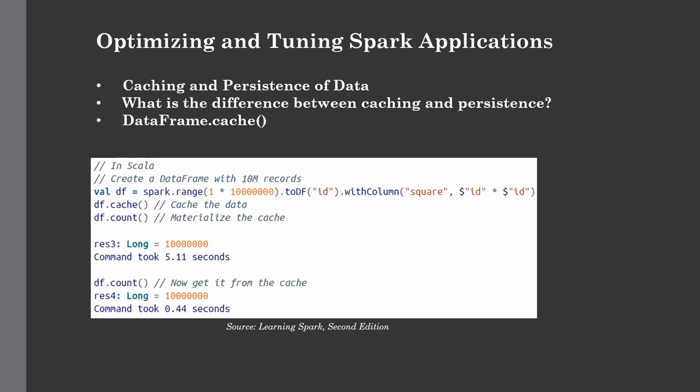You have to remember one important thing: when using cache or persist, the data frame is not fully cached until you invoke an action that goes through every record, like count. If you use an action like take and retrieve only one record, only one partition will be cached, because Spark will realize it doesn't need to compute all partitions just to retrieve one record. The cache syntax is simple: just call dataframe.cache() with no additional inputs.